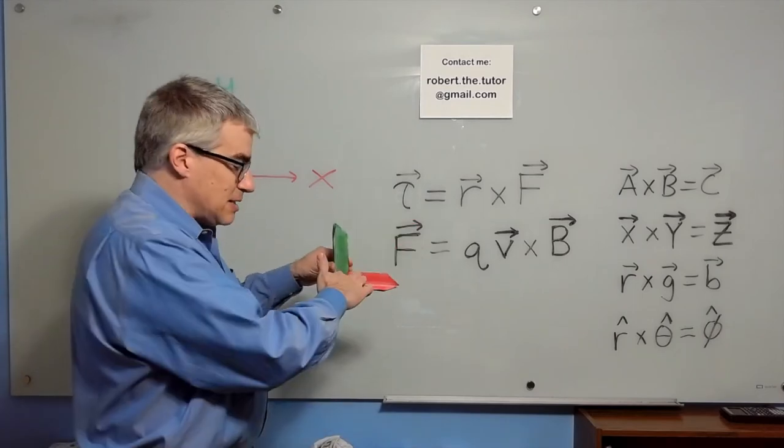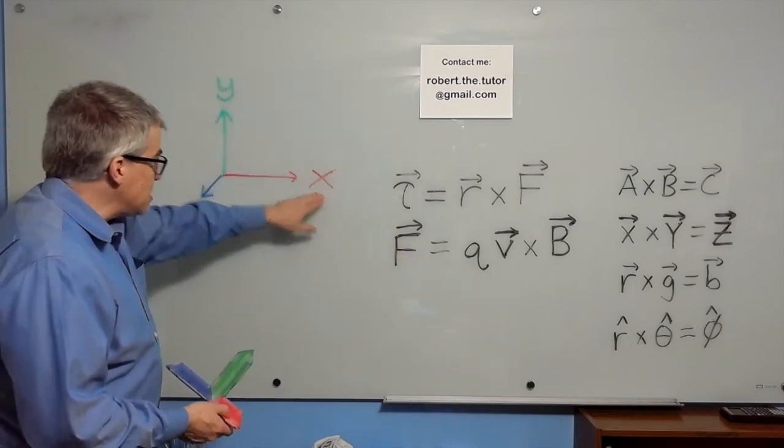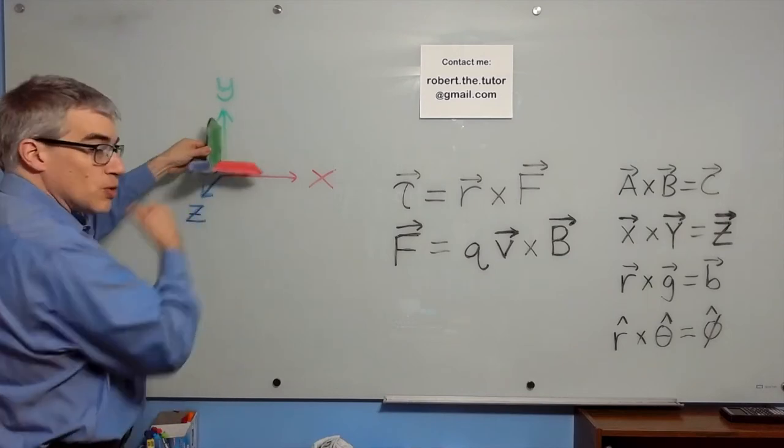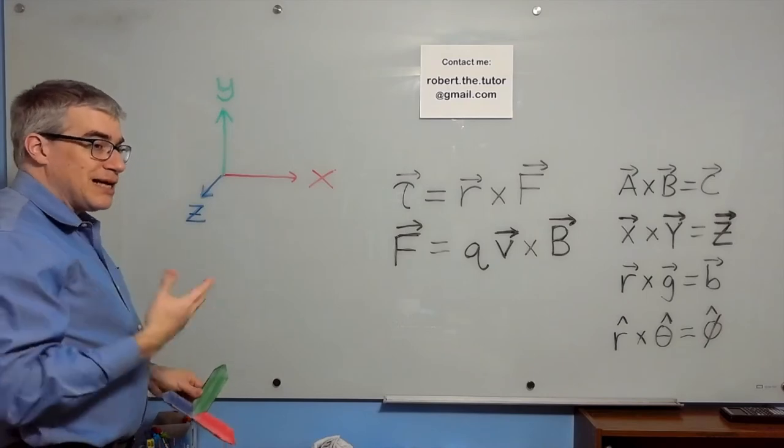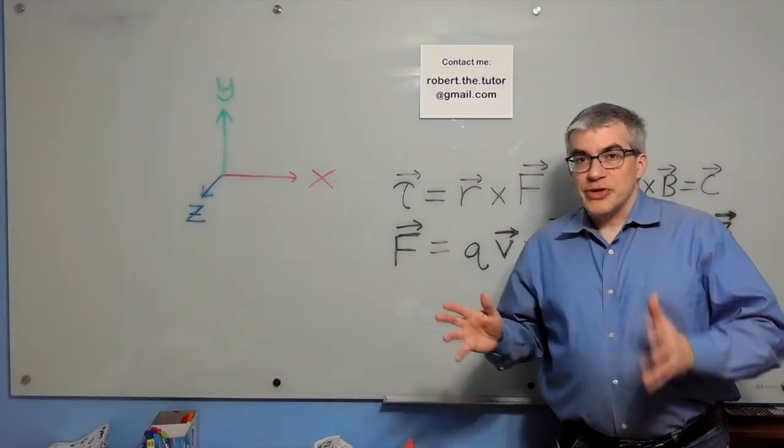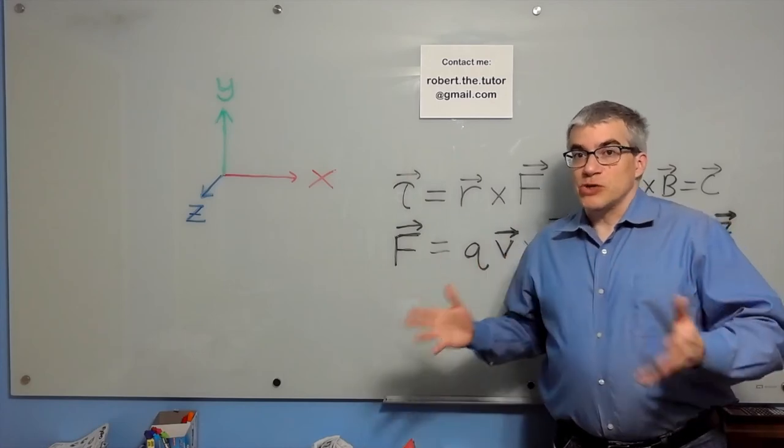For right-handed, it's sticking out towards us. A right-handed coordinate system has x and y in their standard positions, and z points out towards us. Positive x, positive y, positive z. That's a right-handed coordinate system. When physics was first developed, this was an arbitrary choice, but now it's hardwired into all of our formulas. You need to know which way you're talking about.